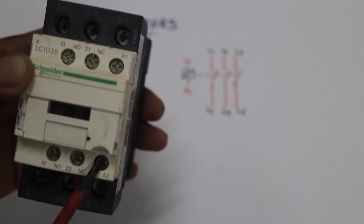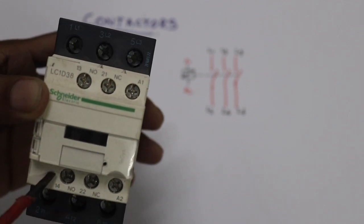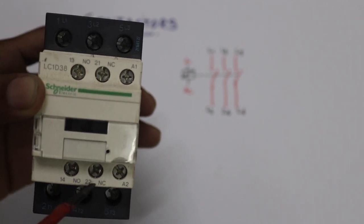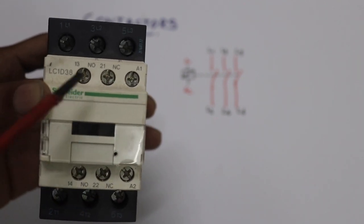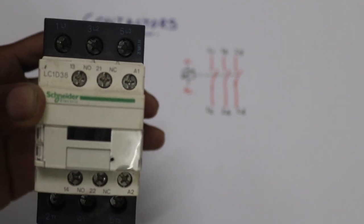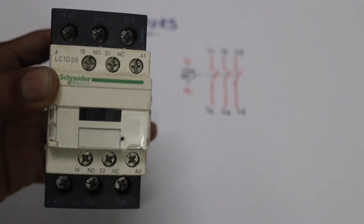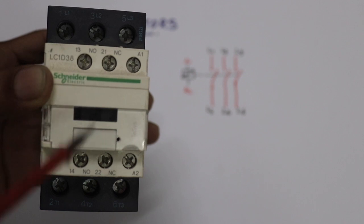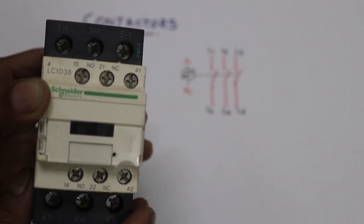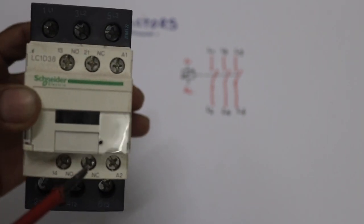In this case we will connect these terminals. Here are the 4 auxiliary terminals. This is 13-14 and 21-22. The terminals are normally open and closed. The terminals are either not supplied or supplied.